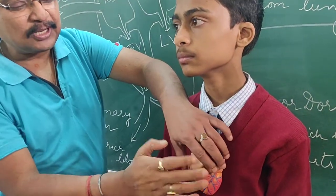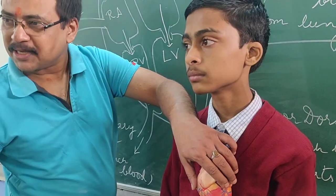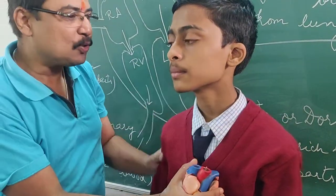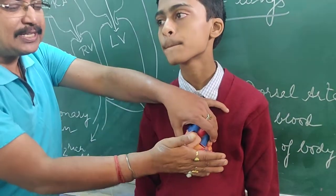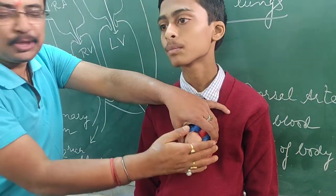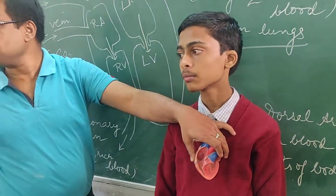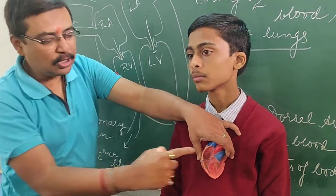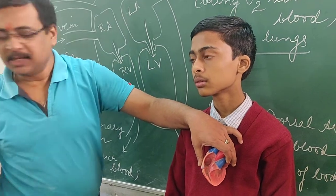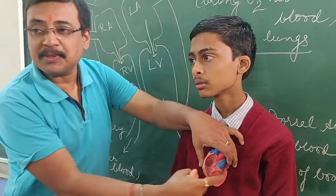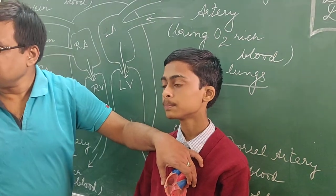The heart is situated in the thoracic cavity between the two lungs. Now let's look at the human heart and cut it longitudinally. When we cut the heart longitudinally, we have chambers: the upper chambers are called auricles, and the lower chambers are called ventricles.